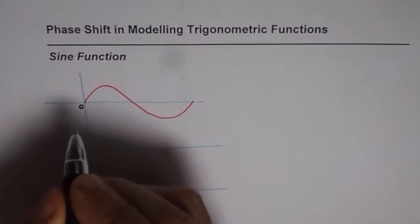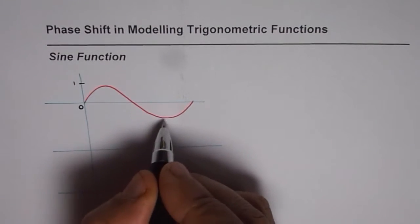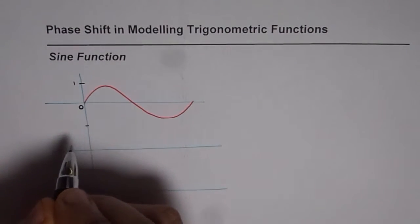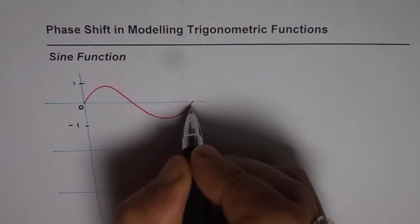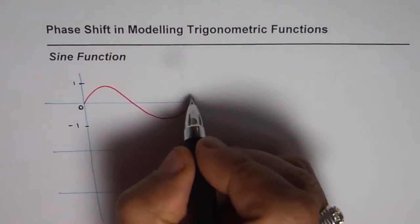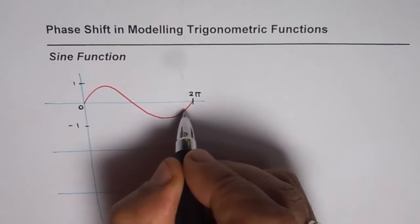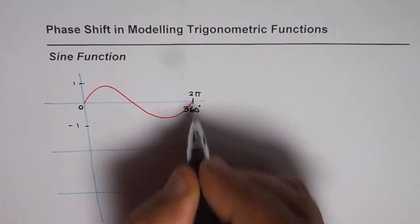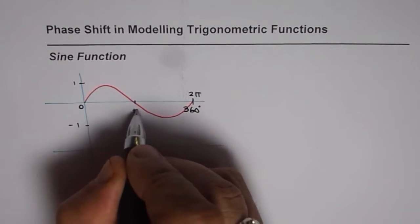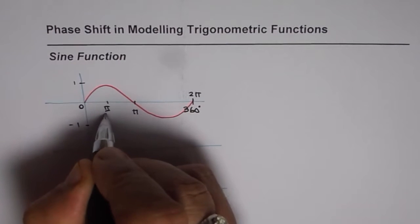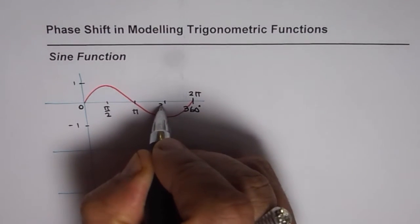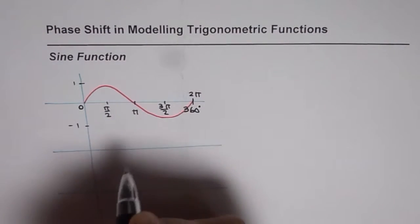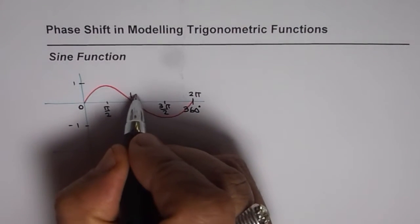Let me write down here, so this is 0, amplitude of 1, it goes from plus 1 to minus 1. Time period in radians will be 2π and 360 degrees. Half of the wave will be π, and here we have π/2, this is 3π/2 in radians.